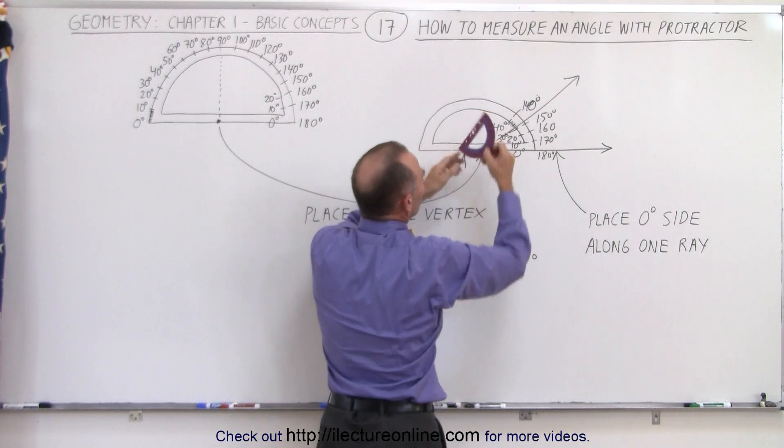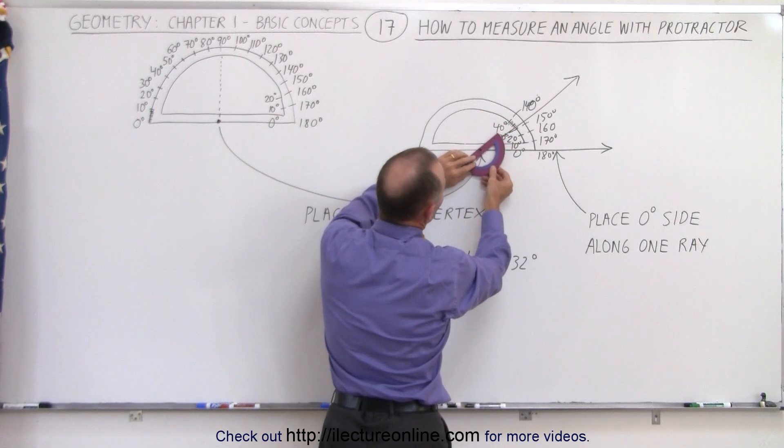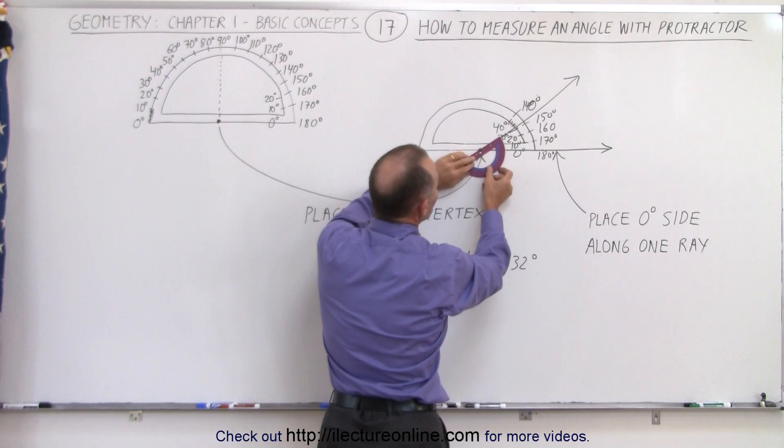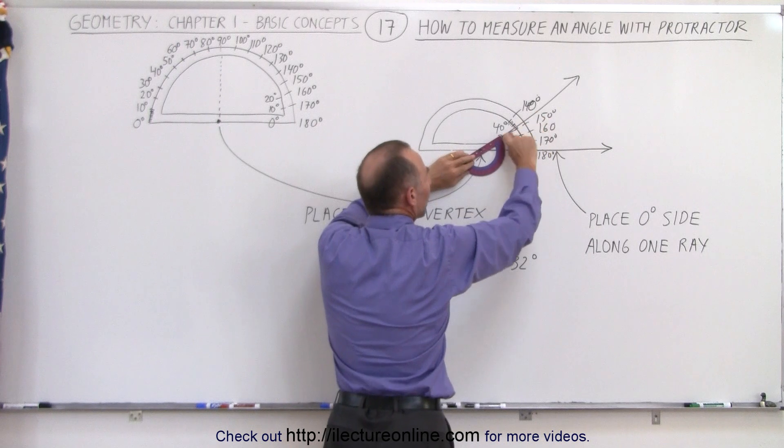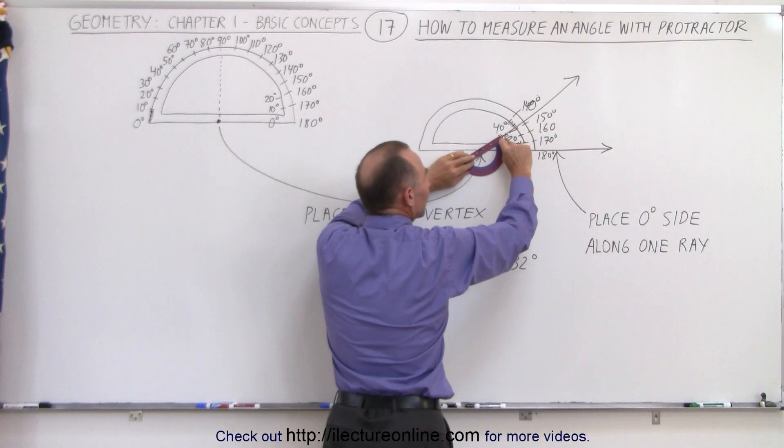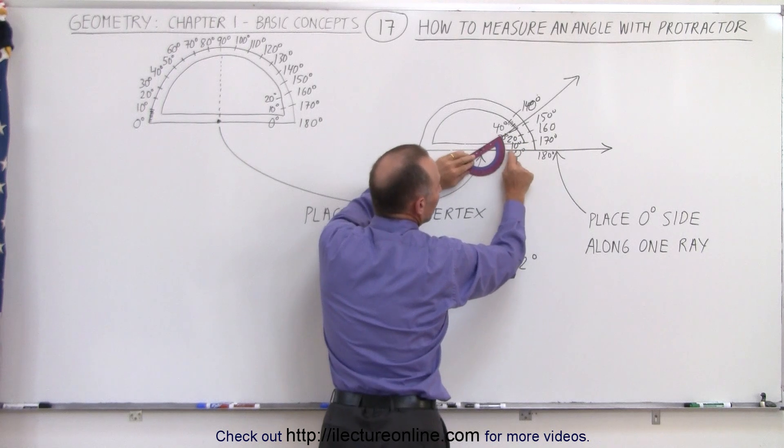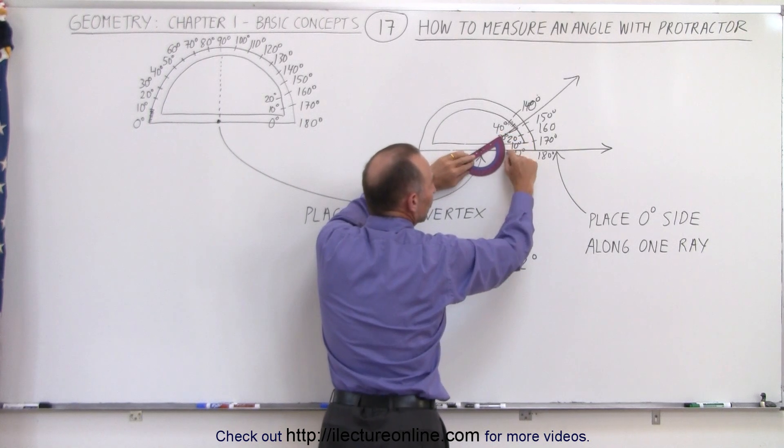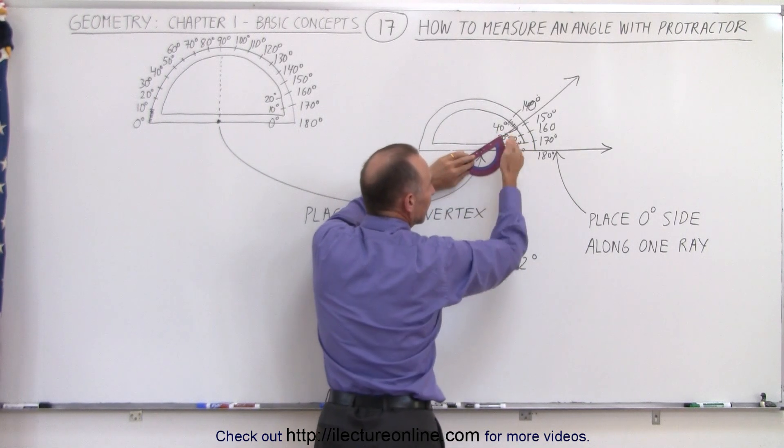Or you could do it the other way around, you could put the dot right there, take the ray like this, take the ray and put it right at the zero reading right here, because the zero reading is not quite at the edge, so it's right there, and then here you would read the actual measure of the angle along the edge right here.